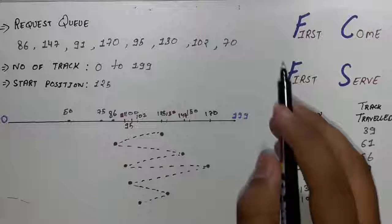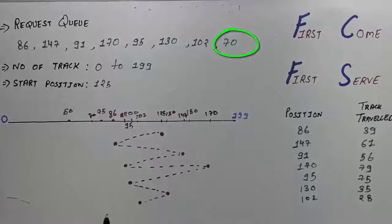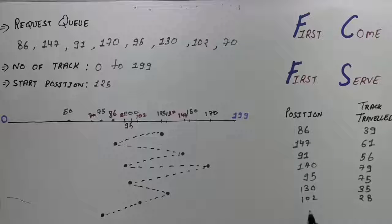Then you can see the last number is 70. So our header will move to 70 and 70 will be somewhere here. So draw the head here and draw the line and the difference between 102 and 70 will be 32.